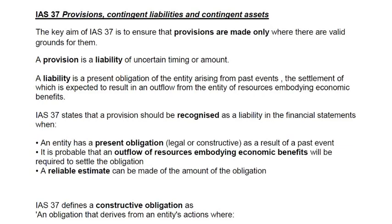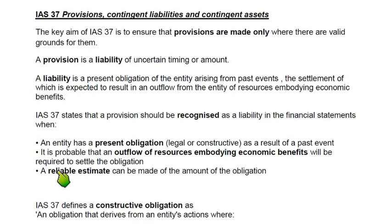For warranty, there is a more than 50% chance that some products will be returned — for example, out of 100 cell phones sold, 10 to 15 may come back under warranty. We also need a reliable estimate: having been in business a long time, we can estimate how many phones require minor versus major repairs. If all three conditions are met, we book a provision.